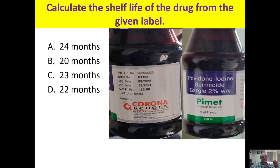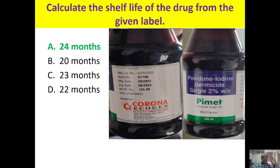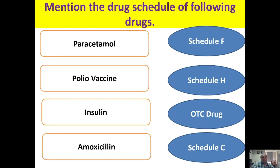Calculate the shelf life of the drug from the given label. Calculate from the manufacturing date to the expiry date: manufacturing date 9/22, expiry date 8/24. From September 2022 to December 2022 is 4 months; January 2023 to August 2024 is 20 months — totaling 24 months. The answer is 24 months.